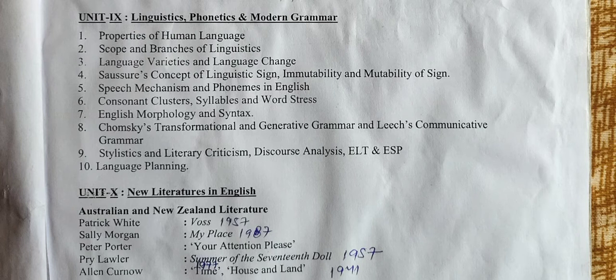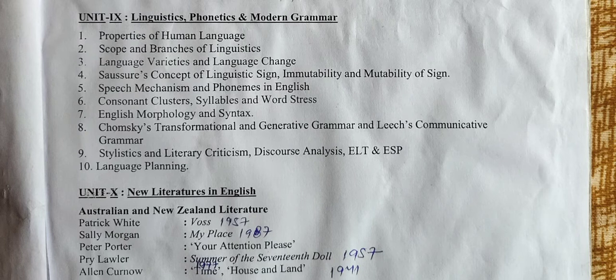Unit 9: Linguistics, Phonetics and Modern Grammar. Topics include: Properties of Human Language, Scope and Branches of Linguistics, Language Varieties and Language Change, Saussure's Concept of Linguistic Sign — Immutability and Mutability of Sign, Speech Mechanism and Phonemes of English, Consonant Clusters, Syllables and Word Stress, English Morphology and Syntax, Noam Chomsky's Transformational and Generative Grammar, Leech's Communicative Grammar, Stylistics and Literary Criticism, Discourse Analysis, ELT and ESP, and Language Planning.